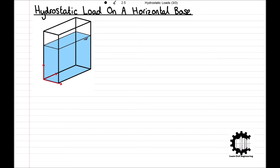To start off, consider the situation shown here in the diagram of a uniform rectangular tank containing a static liquid of uniform density rho. The tank is open and the liquid's free surface is exposed to the atmosphere. The base and sidewalls of the tank are planar surfaces with the base being horizontal and the four sidewalls being vertical. The liquid has a uniform depth of H0 and the tank has a length of L and a width of W.